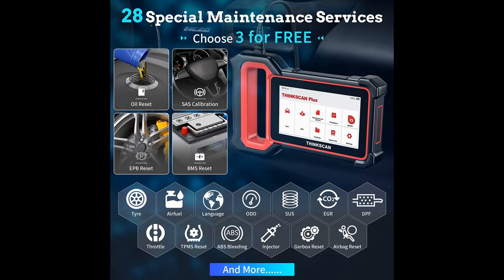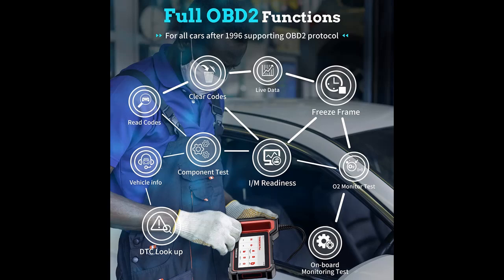The ThinkScan Plus S4 OBD2 Scanner supports 5 main system diagnoses including engine, transmission, body control, ABS, and SRS. It also reads and resets codes, displays data stream graphics, and stores and plays back dynamic data stream to help with quick analysis and diagnosis.